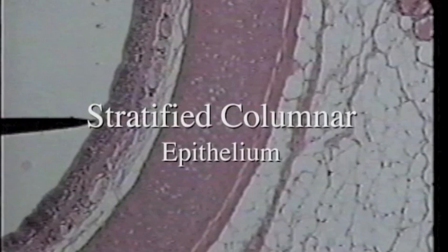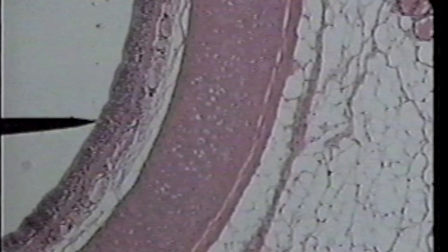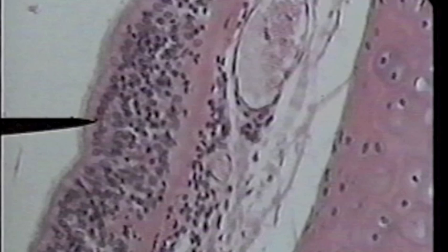This slide is the trachea at low power. The tip of the pointer is on the epithelial layer of the trachea. This is actually a layer of stratified columnar cells, but you can't really tell that this epithelial layer is many layers of columnar cells on low power. We will now move to the same slide on high power so that we'll be able to see.